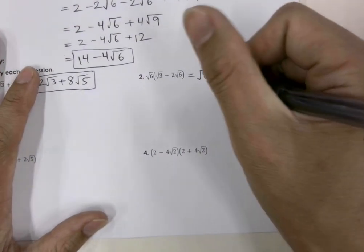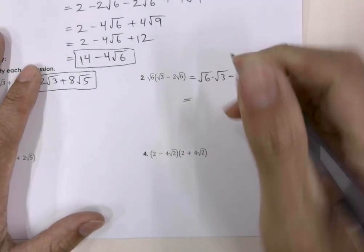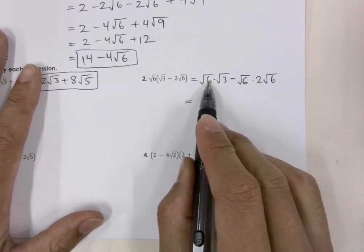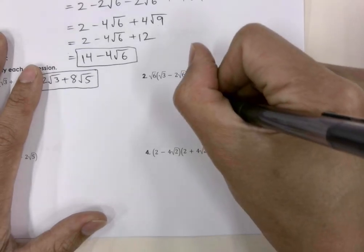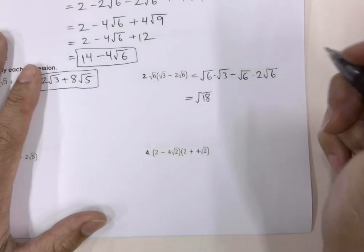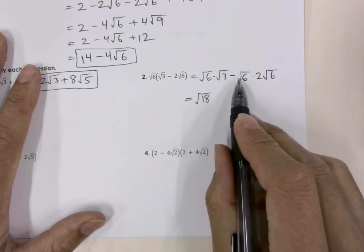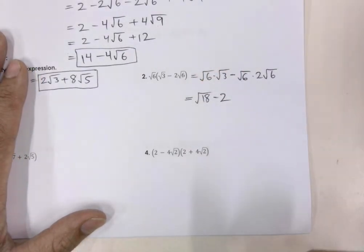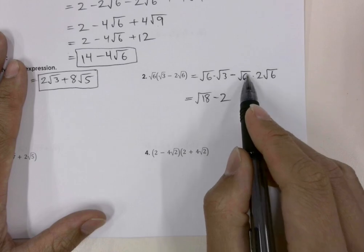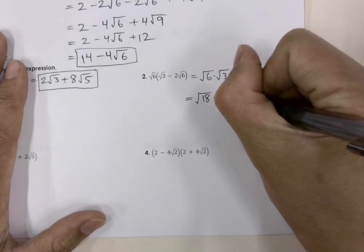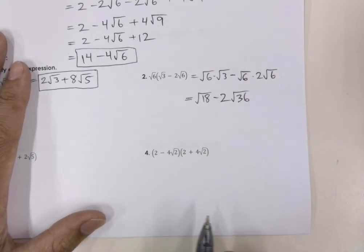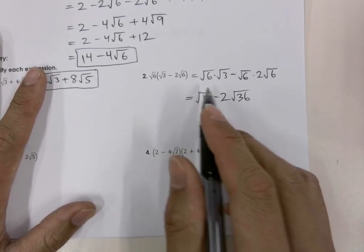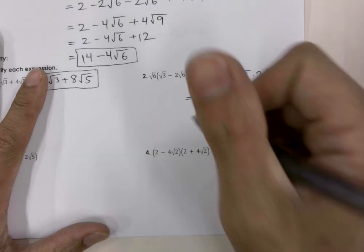Now let's multiply it out and see what we get. When we multiply two radicals, you multiply what's under the radical. So we get 6 times 3 is 18, so we get square root 18. Over here we have negative 1 times positive 2, which is negative 2 on the outside. And then square root 6 times square root 6 is square root 36, or 6.